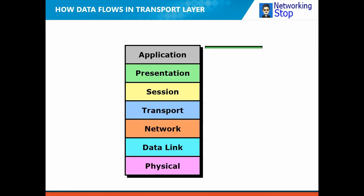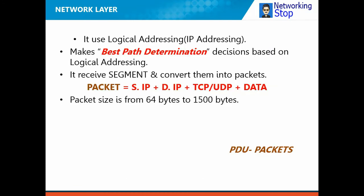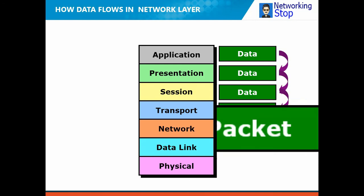After the transport layer we have the network layer. When these segments go further down to the network layer, it adds the logical address — the IP address — to them, converting segments into packets. So: source IP address plus destination IP address plus TCP/UDP equals a packet at the network layer. Routers are located at this layer.